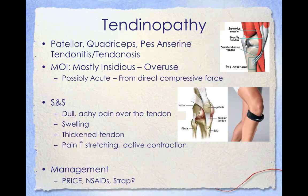Tendinopathy in the knee includes patellar, quadriceps, and pes anserine tendonitis and tendinosis. Patellar tendonitis, also known as jumper's knee, is most common in athletes whose sports involve frequent jumping such as basketball and volleyball, though people who do not participate in jumping sports can also develop it. Most knee tendinopathy injuries result from overuse, though direct compressive force can also cause them. Signs and symptoms include dull achy pain over the tendon, swelling, tendon thickening, increased pain with stretching, and active contractions of the knee. Management should include PRICE, NSAIDs, and a patellar strap — also known as a chopat strap — which may help the tendon and change the line of pull of the muscle.